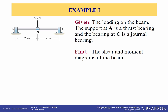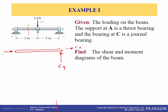So here we have a beam. Support A is a thrust bearing, support C is a journal bearing, and we have a 5 kilonewton load applied at point B. Find the shear and moment diagrams of the beam. First we need to solve for the reactions at A and C, so let's draw a free body diagram of the entire beam. We have Cy, Cx, Ax, and Ay, and we have the 5 kilonewton load.